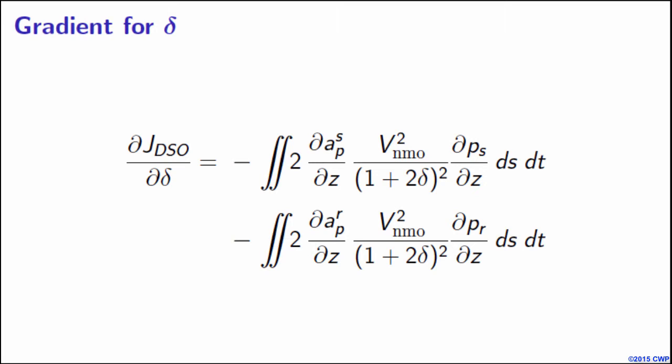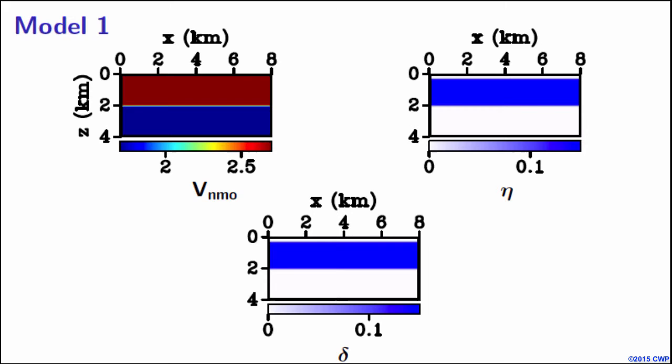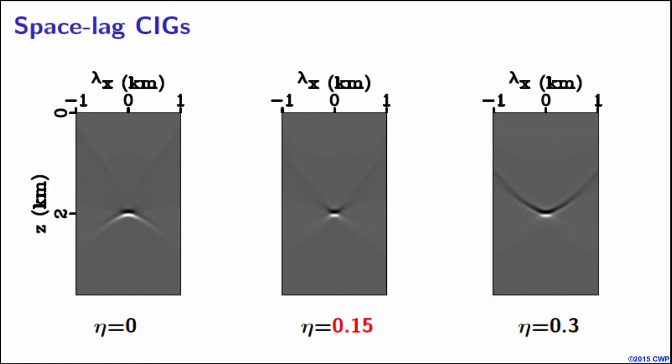Now, for the purpose of verification, let's consider a couple of very simple examples. The first model contains two layers and the values of VTI parameters are constant within each layer. The actual value of eta model is equal to 0.15, which is marked in red here.